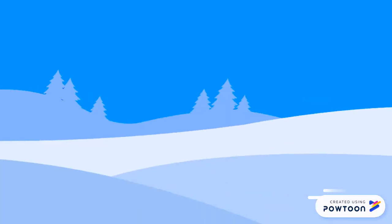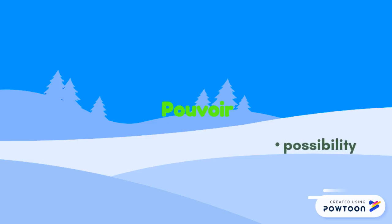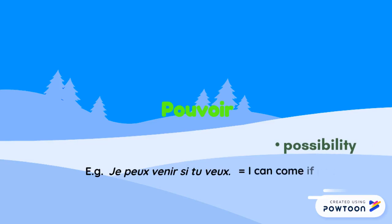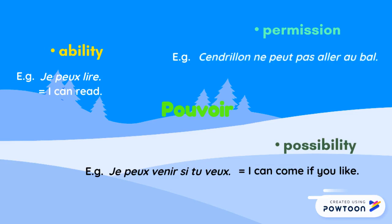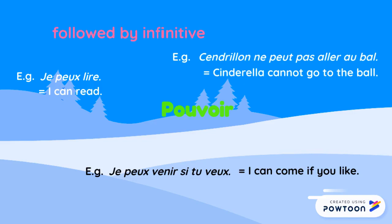The second modal verb is pouvoir. It means 'can, to be able to.' It indicates possibility — for instance, 'je peux venir si tu veux' (I can come if you like) — ability, for example, 'je peux lire' (I can read), or permission, for example, 'Cendrillon ne peut pas aller au bal' (Cinderella cannot go to the ball). It is followed by an infinitive.